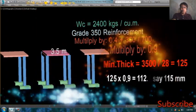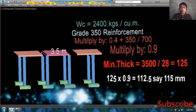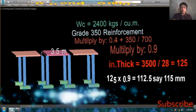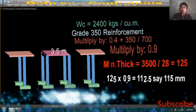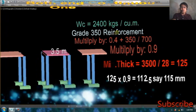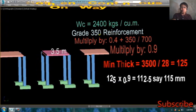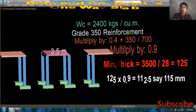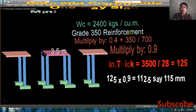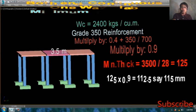Punta na po tayo dito sa computation. Gaya po nung sinabi ko kanina, yung given natin na weight of concrete is 2,400 kilograms per cubic meter. Yung gagamitin po natin grade, hindi na po 415, grade 350 na po yung reinforcement natin. Pag ganun po, imumultiply po natin yan ng 0.9.